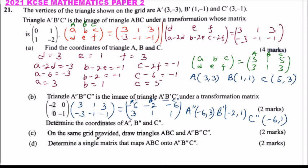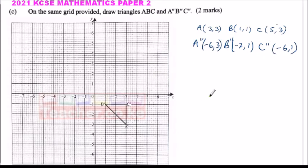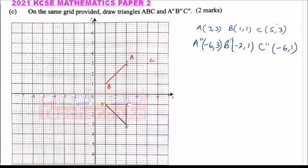Part C: on the same grid provided, draw triangles ABC and A''B''C''. I have already inserted the points needed to draw the two triangles. For triangle ABC: A is at (3, 3), B is at (1, 1), and C is at (5, 3). Use a ruler to join A and B, A and C, and B and C. That is triangle ABC.